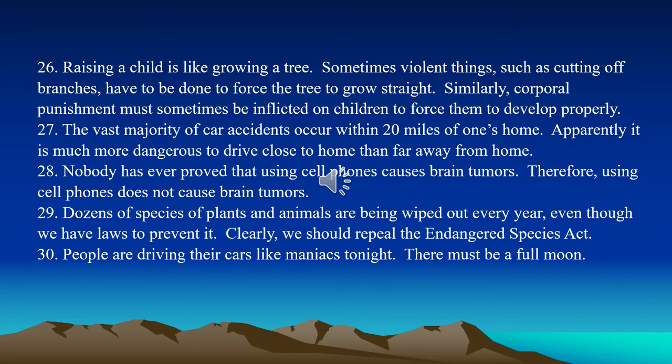Number twenty-seven: The vast majority of car accidents occur within 20 miles of one's home. Apparently it is much more dangerous to drive close to home than far away. This is an example of a false cause fallacy. Driving near your home is not what causes accidents, but rather the fact that you drive most of your miles in proximity to your home. So that's what's causing the accidents — that's a false cause.